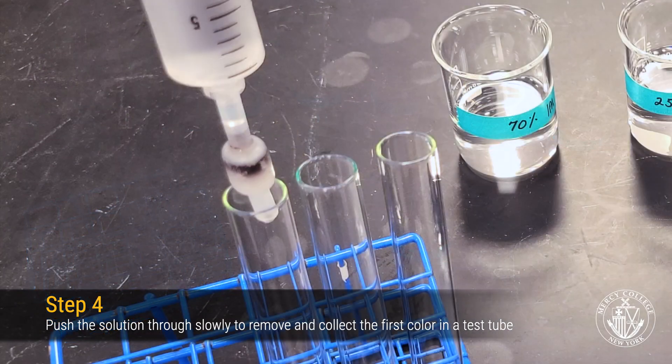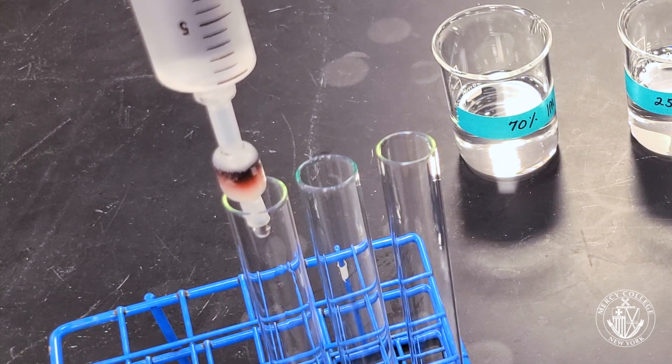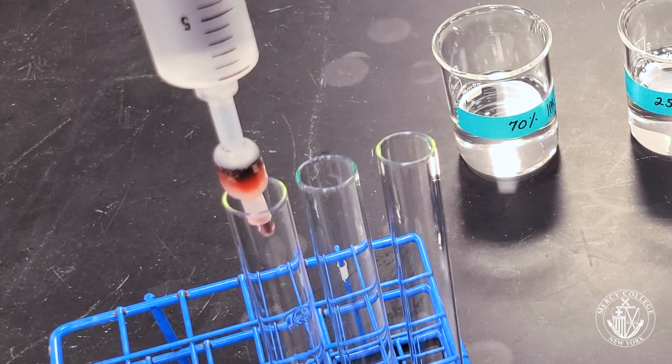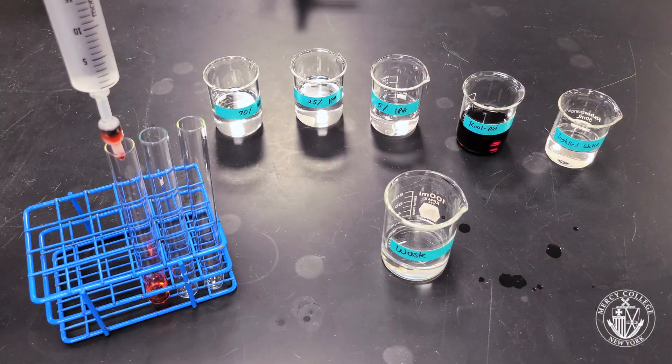Now position the syringe above your first test tube and begin to push through the 5% IPA solution. You should see that the 5% IPA solution begins to remove the red color from the chromatography column while leaving the blue color behind.